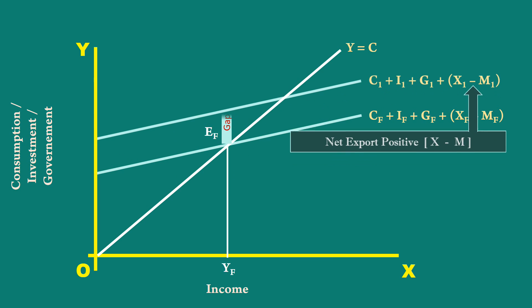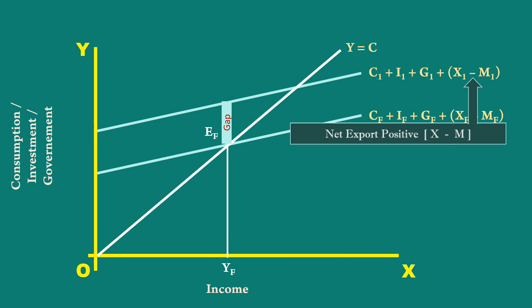4. If exports exceed imports or net export is positive, the people will get more money. They spend this money in the domestic economy. This also will shift the aggregate demand curve up and create inflationary gap. These are the causes for aggregate demand curve to shift upwards.